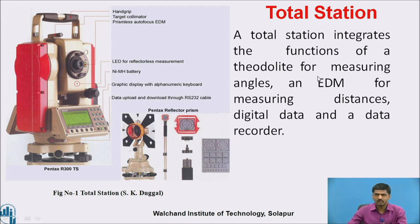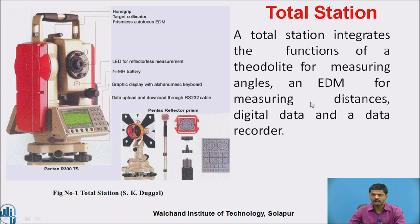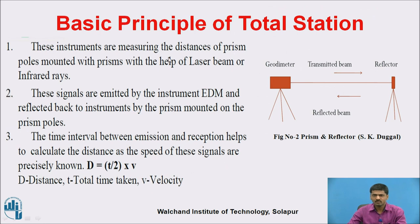So what is the purpose of using this particular Total Station? A Total Station functions very similar to the theodolite — to measure the angles by using an electronic distance meter. Similarly, we are using the same instrument for measuring distances, maybe horizontal and vertical distances, and to record this particular data directly in this particular instrument.